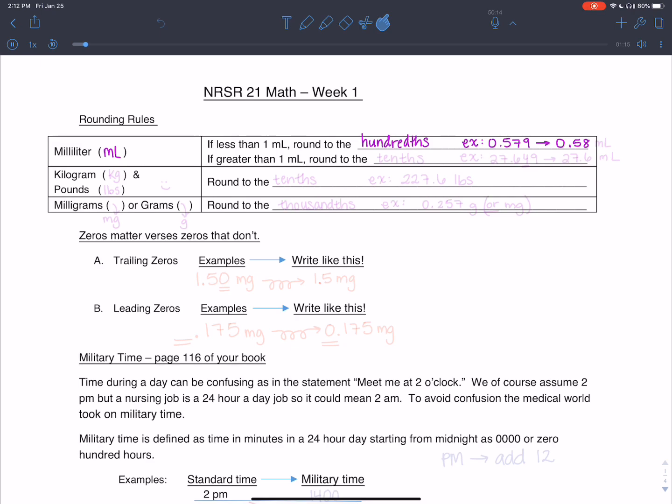So if greater than one milliliter, we round to the tenths. So example would be 27.649 and we wanted to round to the tenths place. The six is in the tenths place. So that's what we're looking at. If we take that six, the four which is right after, it doesn't matter what's after the four, it matters what's right after the six. Since it's a four there, it's less than five, we round down. We keep it where it is. So 27.6 milliliters is the answer. Units are very important, so we want to write them.